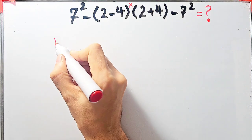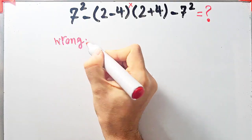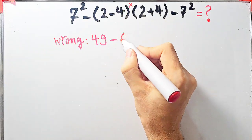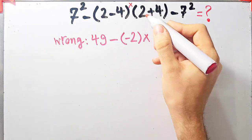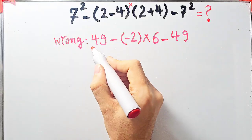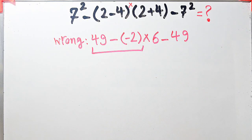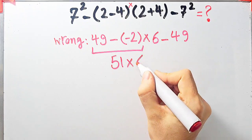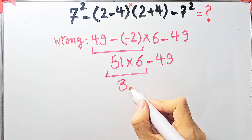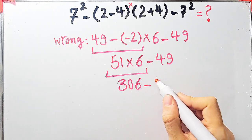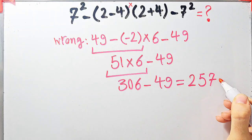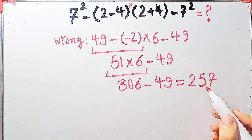In the wrong way of solving this question, some people say 7 to the power of 2 equals 49, then compute 49 minus 2 minus 4, which equals negative 2, then times 2 plus 4, which equals 6, then minus 7 to the power of 2, which equals 49. Starting from the left: 49 minus negative 2 equals 51, times 6 minus 49. 51 times 6 equals 306, and 306 minus 49 equals 257. But this answer is definitely wrong.